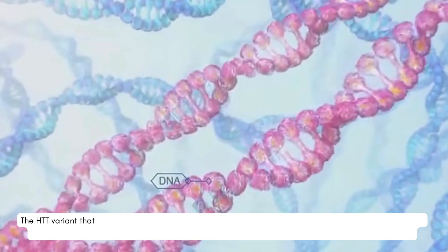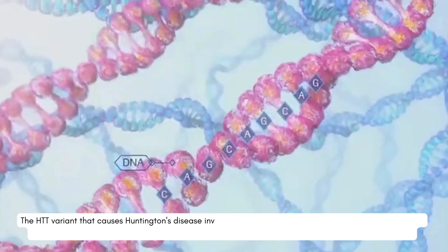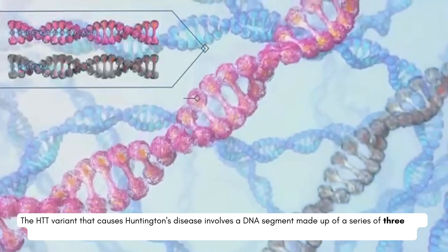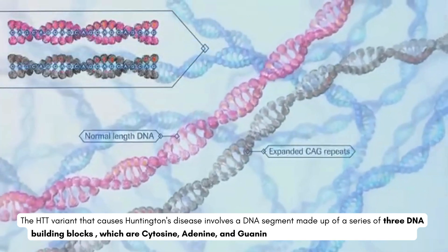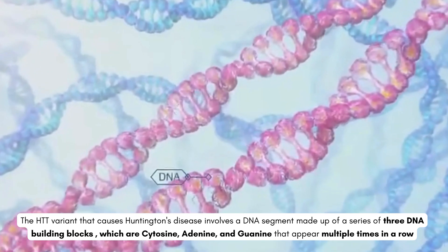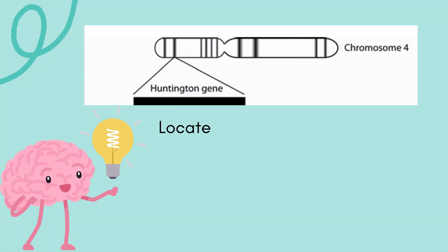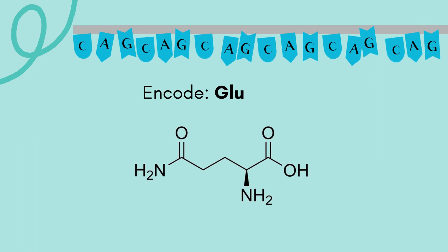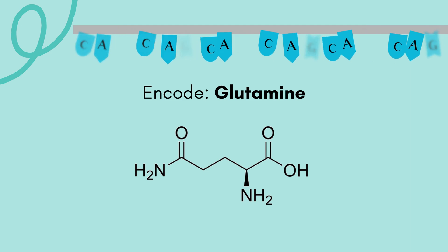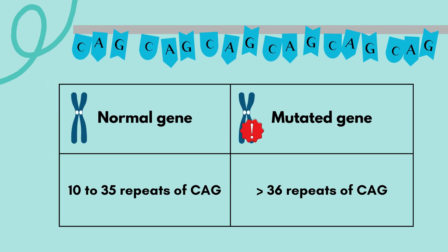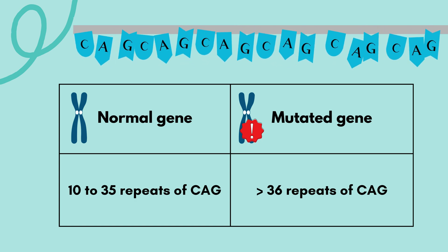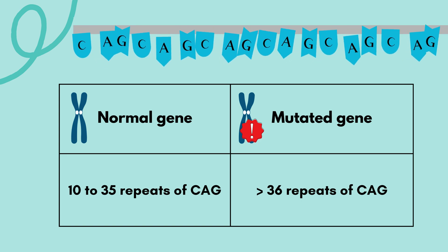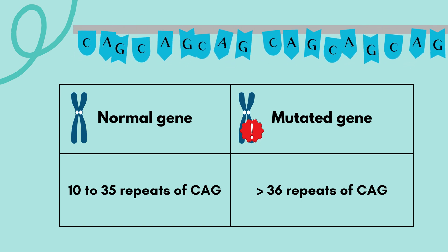The HTT variant that causes Huntington's disease involves a DNA segment made up of three DNA building blocks — cytosine, adenine and guanine — that appear multiple times in a row. The mutation is found on chromosome number 4. The codon CAG encodes for the amino acid glutamine. Normally, the CAG segment is repeated 10 to 35 times within the gene. However, in people with Huntington's disease, the CAG segment is repeated more than 36 times.